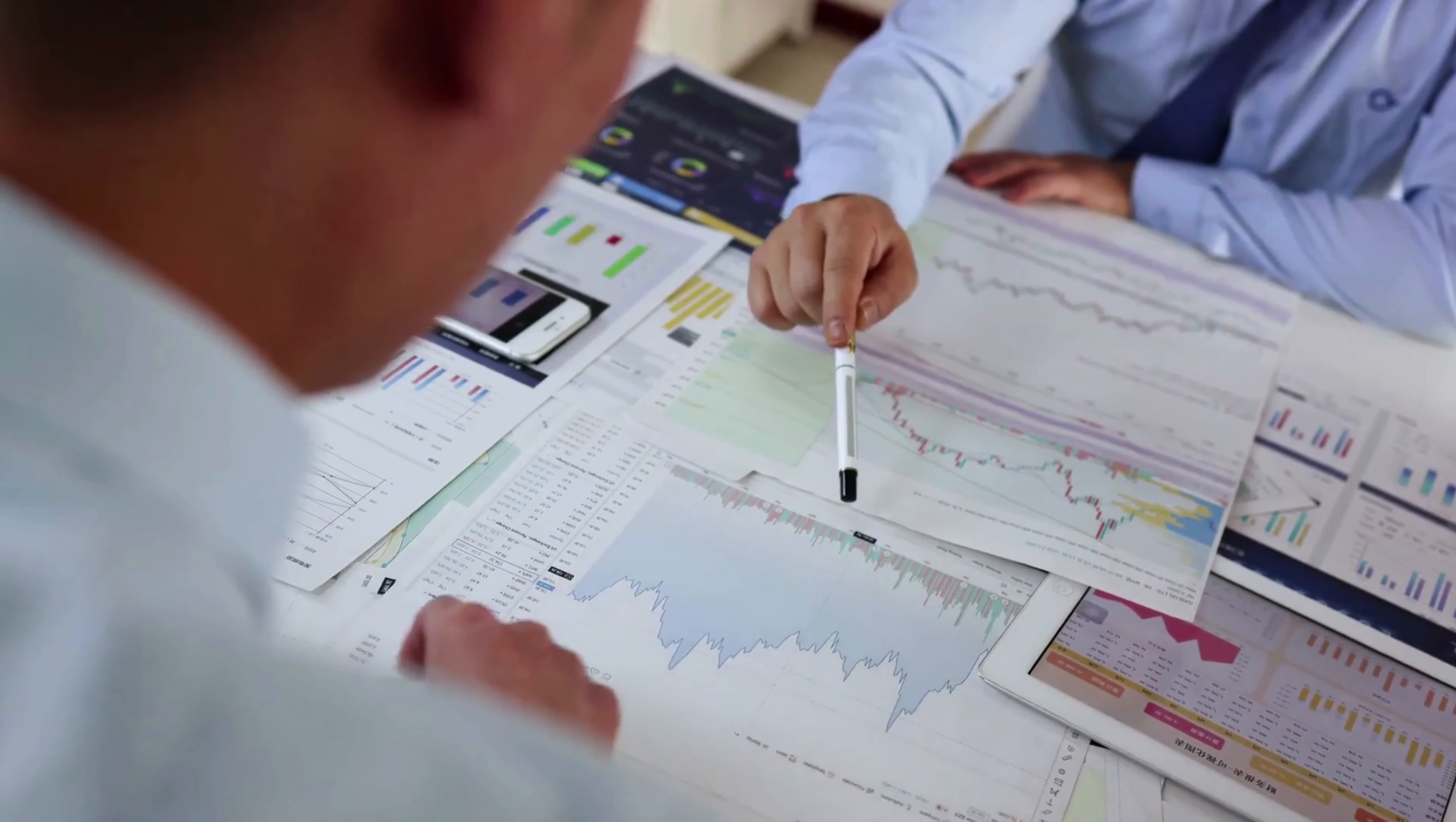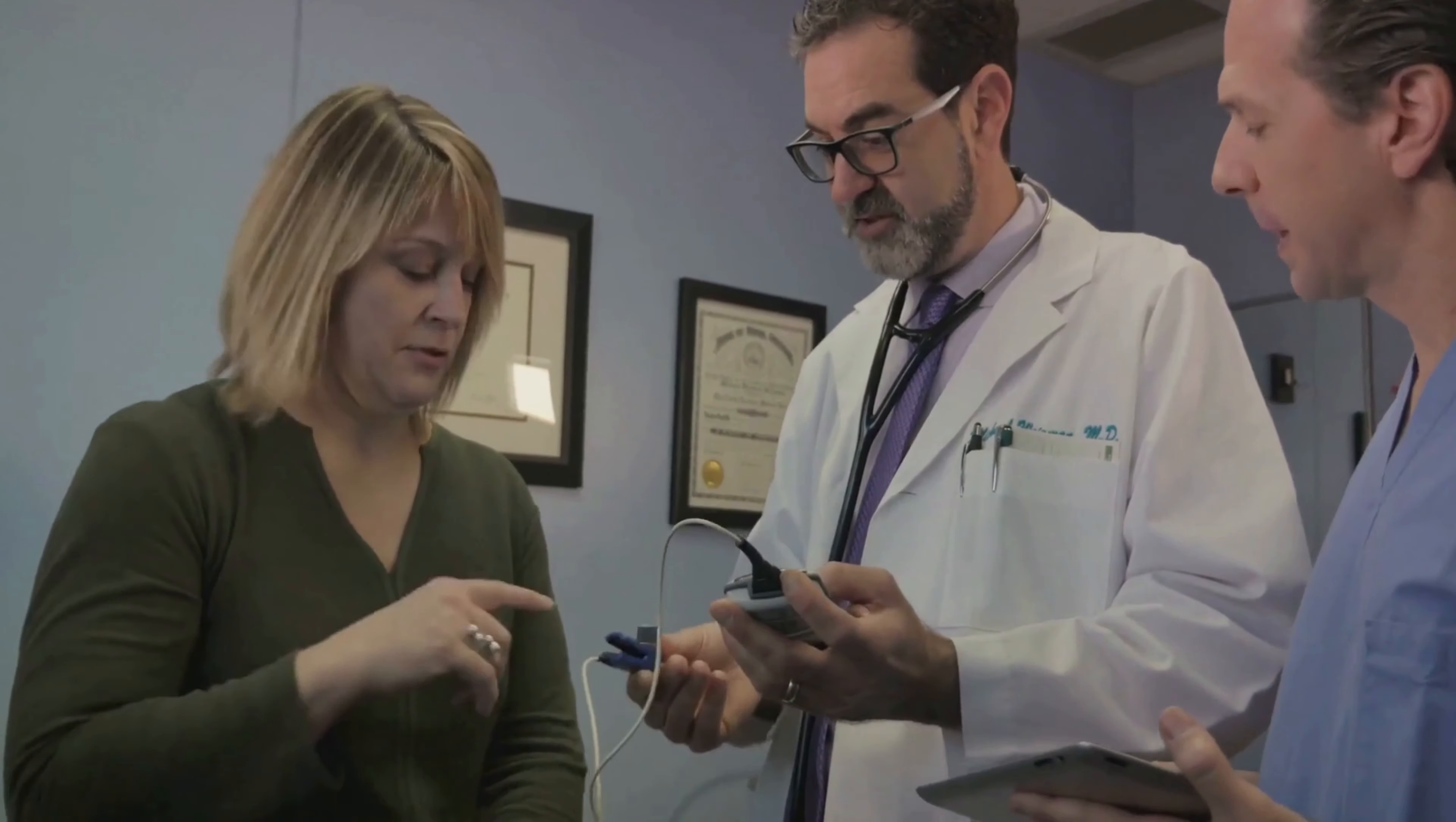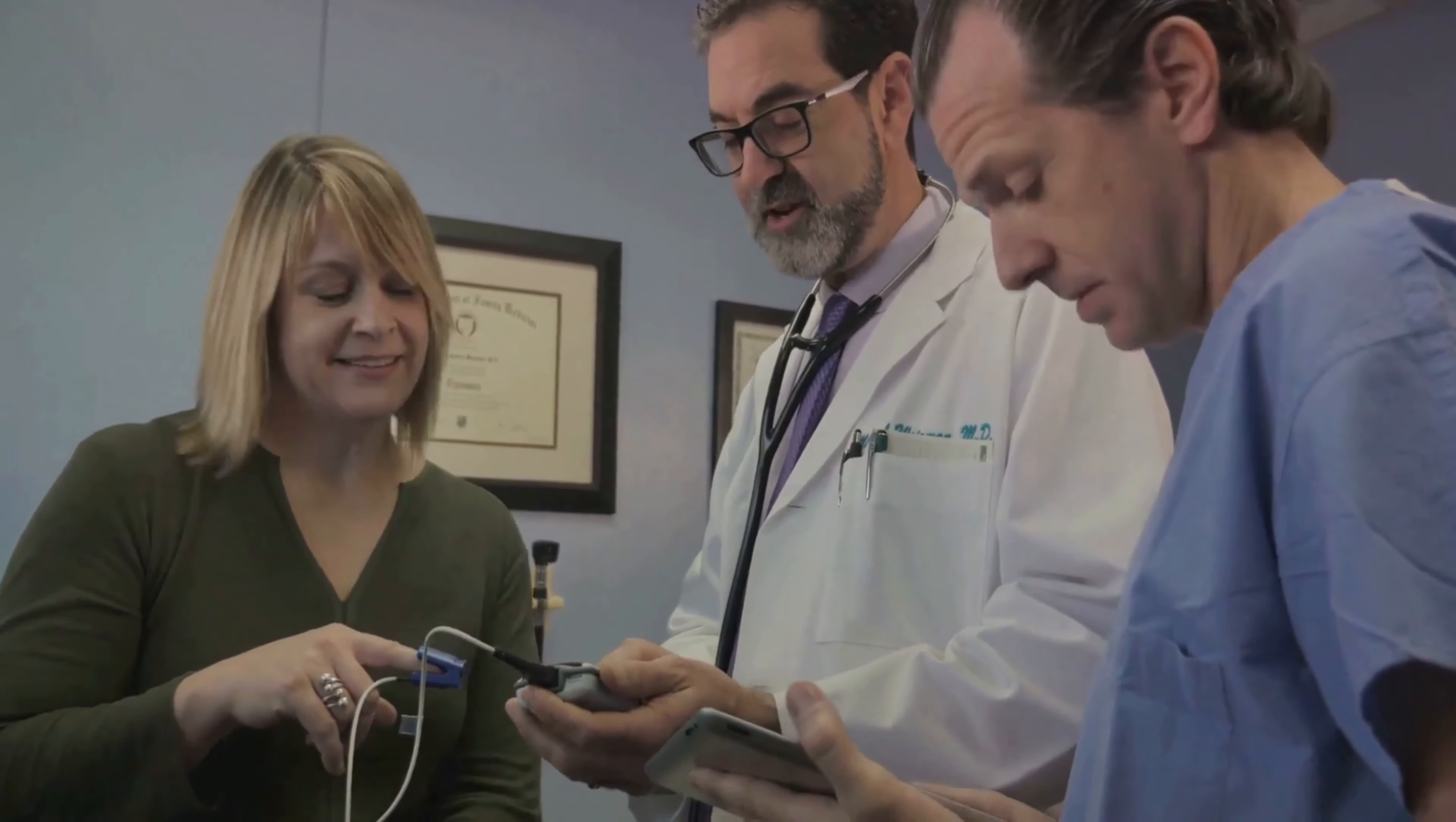Moving on to healthcare. In the medical field, sigmas are pivotal for quality control and process improvement. They're used to measure variations in healthcare processes from patient wait times to surgical procedures. By identifying and reducing these variations, healthcare providers can improve patient outcomes, safety, and satisfaction. A six sigma process, for instance, is considered to be nearly defect-free, leading to better patient care.